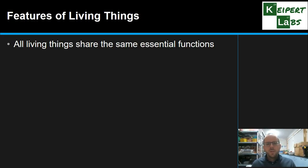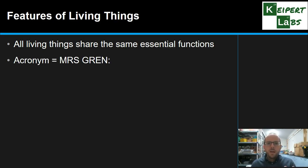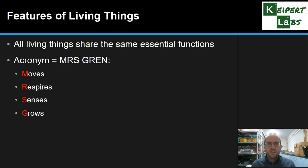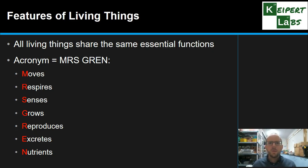So, features of living things. All living things share the same essential functions because they're all made up of cells, and all cells have certain things that they need to do and certain substances that they need in order to survive. The acronym we're going to use to look at these seven key characteristics is Mrs. Grimm: M is for moves, the first R is for respires, S for senses, G for grows, R for reproduces, E for excretes, and N for nutrients. We're going to go through each one now so you can unpack what they mean a little bit further.